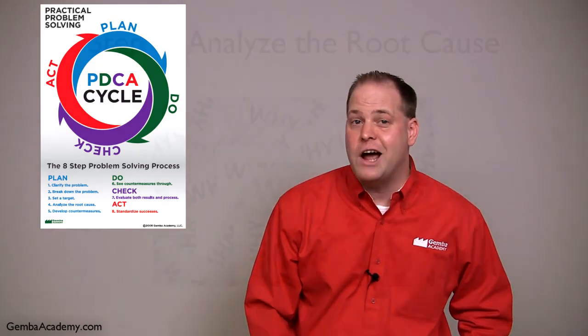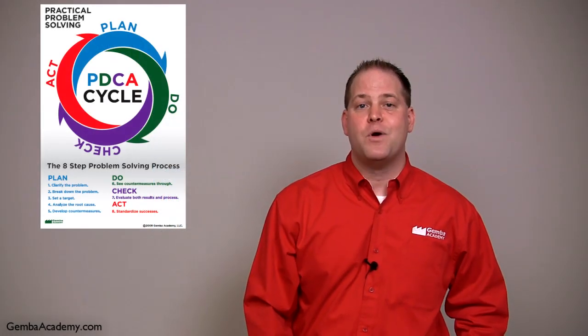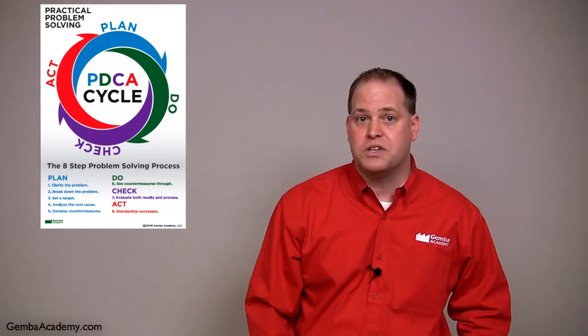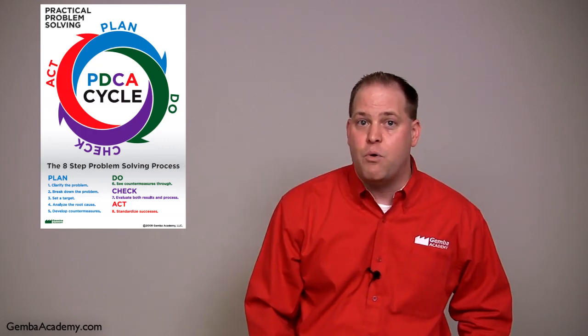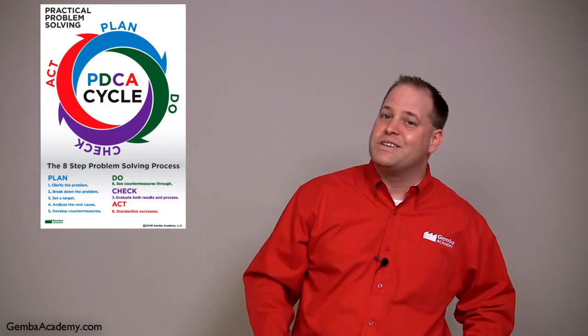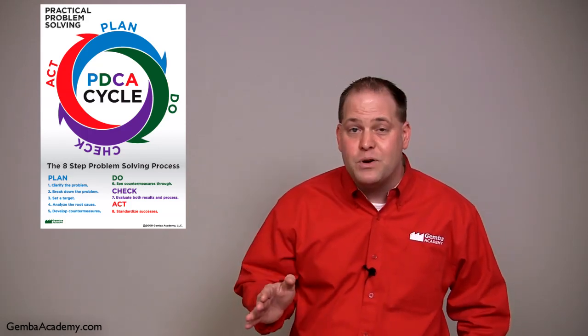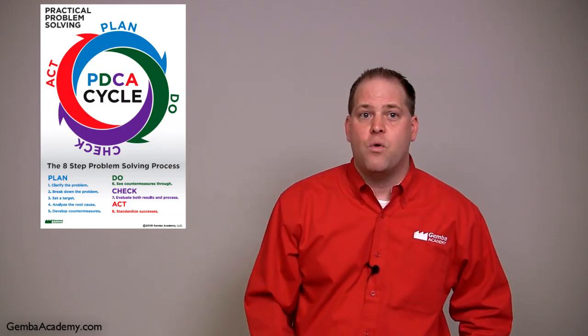Next, step four has us analyzing the root cause. Once again, to do this, we must practice Genchi Genbutsu without prejudice, which means we must go and see the problems for ourselves instead of relying on what a report says. During this step, we'll work to find points of cause, which is the starting point of root cause analysis. There are often multiple points of cause, so we must drill down using things like the 5 Whys. And for the record, 5 is not a magic number. It's just a typical number suggested to get to the root cause. A proper root cause analysis will point to the action needed, namely the removal of the root cause.